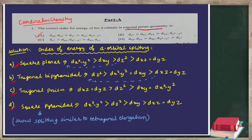The trick is: if you know the square planar d orbital splitting order — dx²-y² > dxy > dz² > dxz = dyz — then for trigonal prismatic, just bring dz² to the front and the rest remain the same, with a slight change: dz² > dx²-y² = dxy > dxz = dyz.